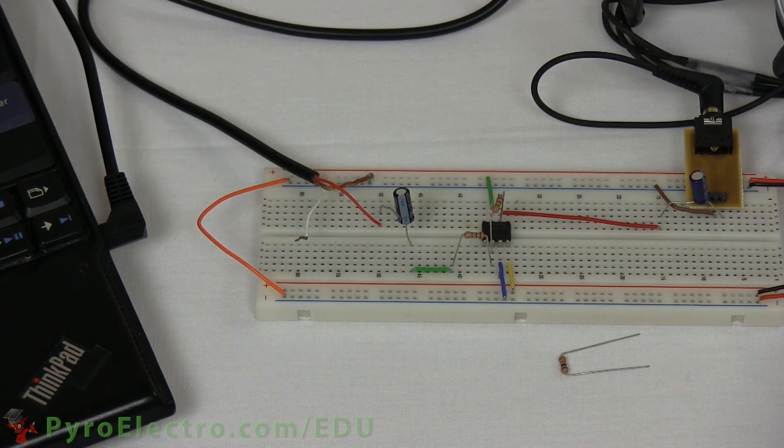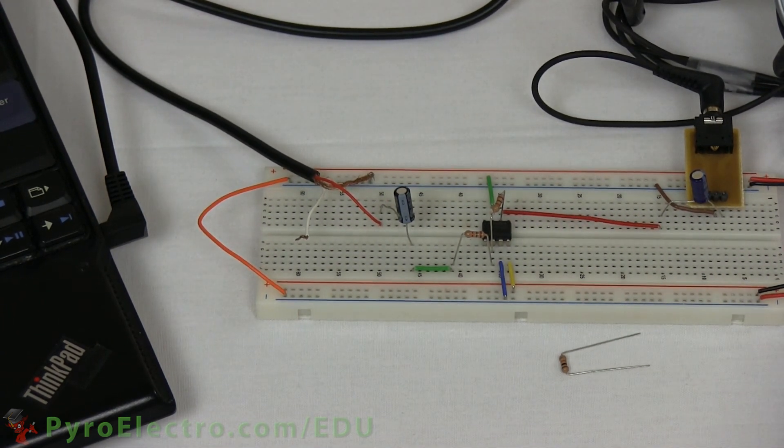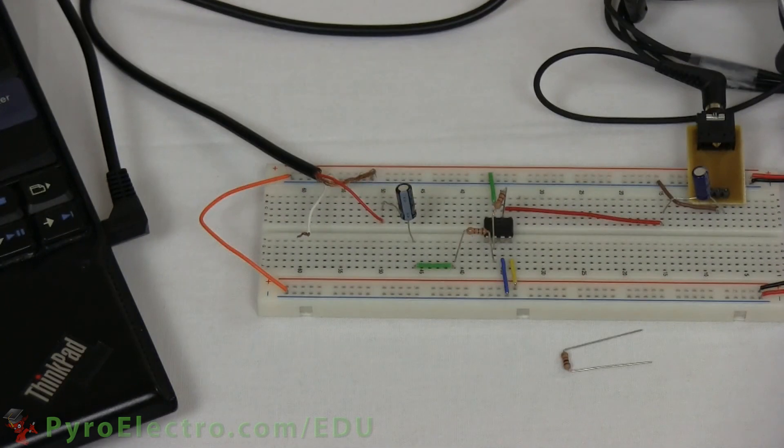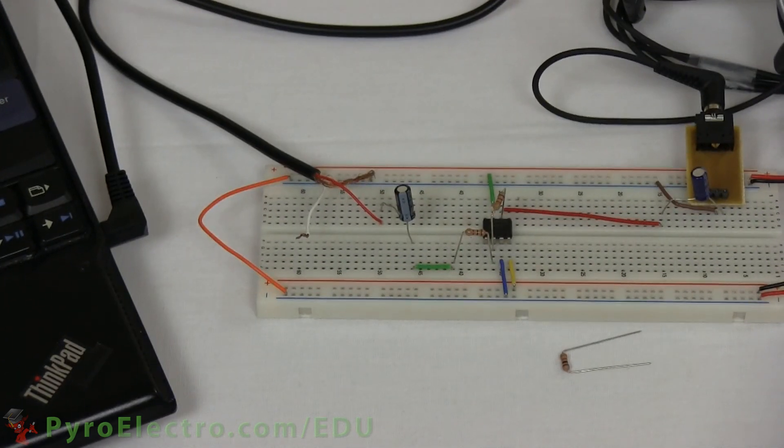Try putting in normal sound or music from your MP3 player or laptop and see how the amplifier works with it when you set R2 to different values.